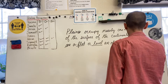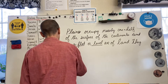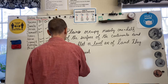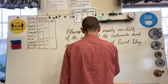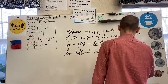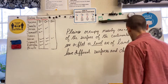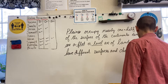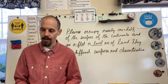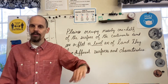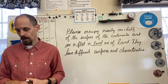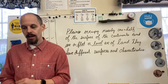Even though plains are flat, they still have different surfaces and characteristics. So they have different surfaces — the top of them is different — and different characteristics means they don't all look the same or feel the same; they operate differently. So what's the very first kind of plain we have?